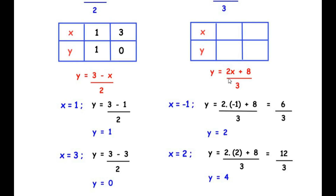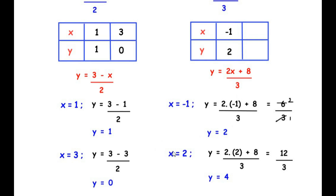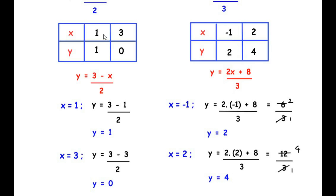For the second equation y = (2x + 8)/3, since the denominator is 3, choose x values so the numerator is divisible by 3. Taking x = -1: y = (2(-1) + 8)/3 = (-2 + 8)/3 = 6/3 = 2, giving the point (-1, 2). Taking x = 2: y = (2(2) + 8)/3 = (4 + 8)/3 = 12/3 = 4, giving the point (2, 4). We now have two coordinates for the second equation.